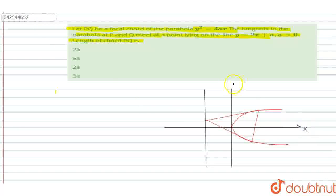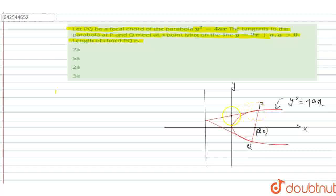Let's assume this one is the x-axis and this one is the y-axis, and this is the parabola y² = 4ax. Let's assume this one is point P and this one is point Q, and this chord passes through the focal point having the coordinate (a, 0). The equation of the directrix is x = -a.